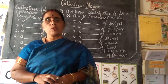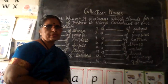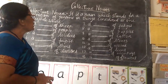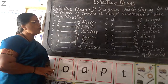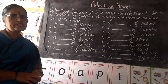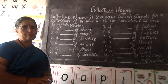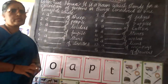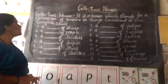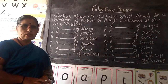In this video we are going to discuss only about the collective noun in detail. What is a collective noun? A collective noun is a noun which stands for a collection of persons or things considered as one collective whole.